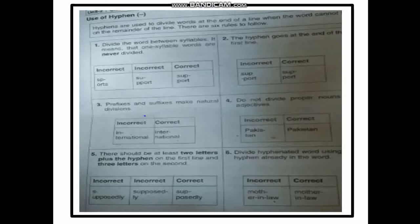If a word at the end of a line has two syllables, one syllable goes at the end of the first line and the second syllable continues on the next line, divided by a hyphen. However, a one-syllable word cannot be divided with a hyphen — that is not acceptable. Rule two: the hyphen goes at the end of the first line.